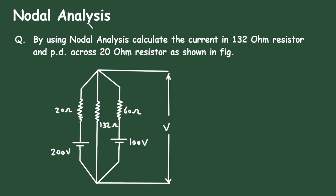Nodal Analysis Question: by using nodal analysis, calculate the current in the 132 ohm resistor and the potential difference across the 20 ohm resistor as shown in the figure.